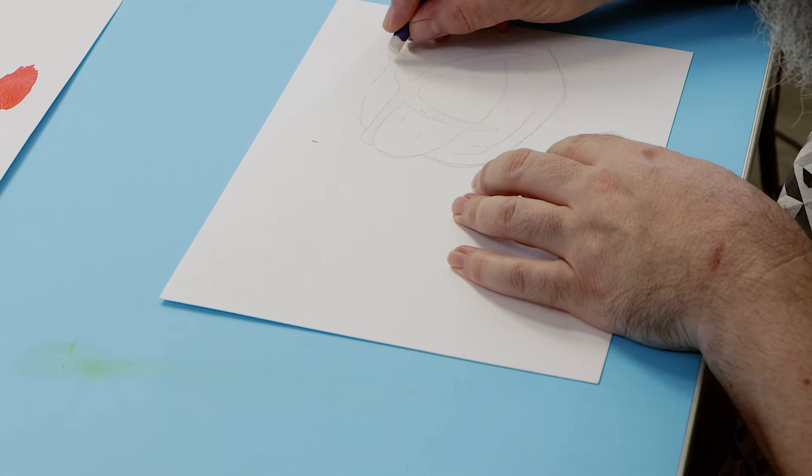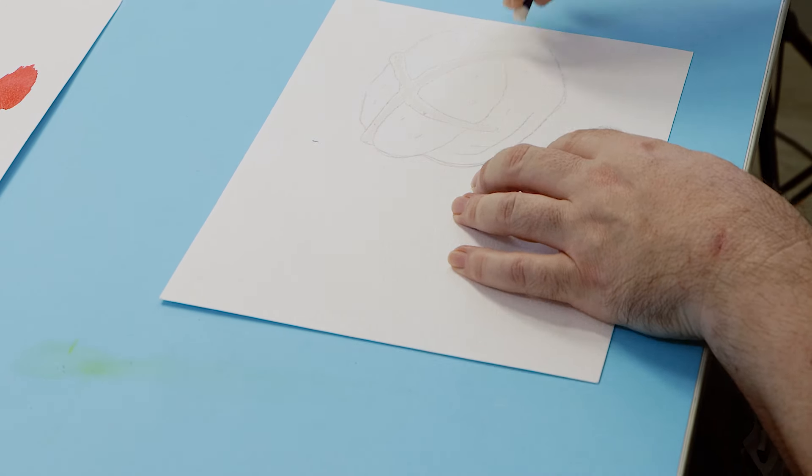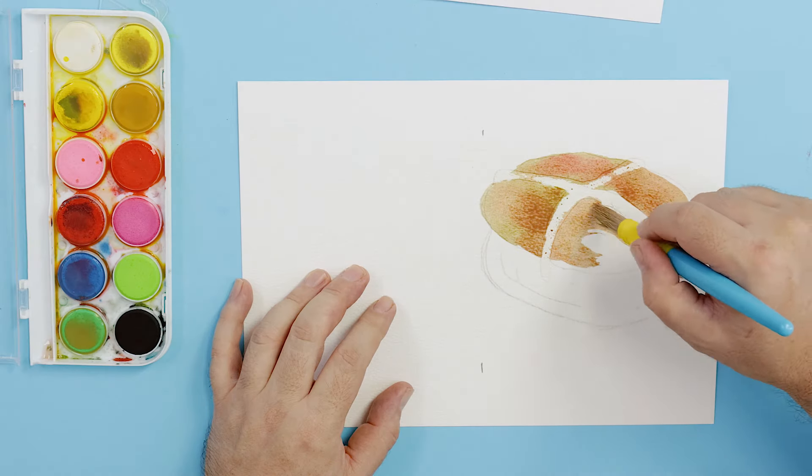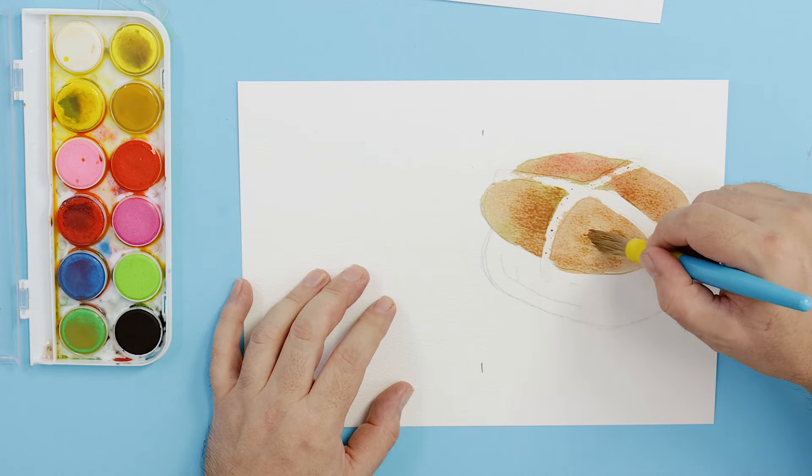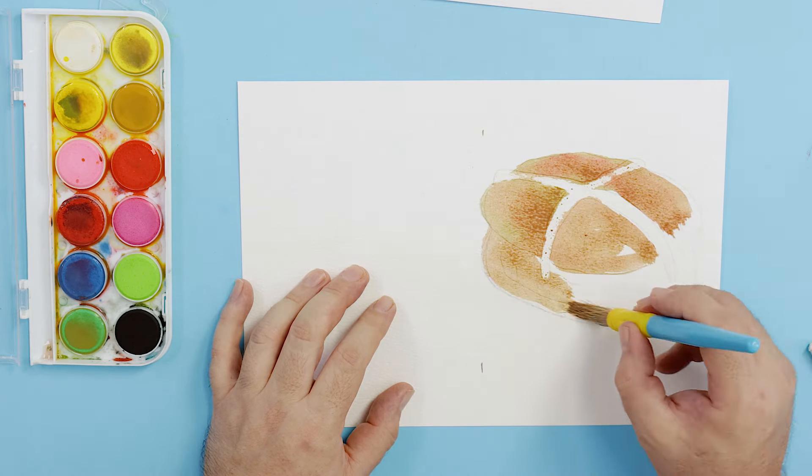Use the crayon to color in the icing cross on the bun. We then mix up a brown from yellow, red, blue and green and paint it into the bun. Make sure the color is right by testing it on a spare piece of paper before committing to painting the bun.